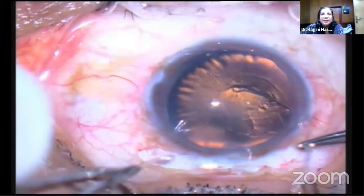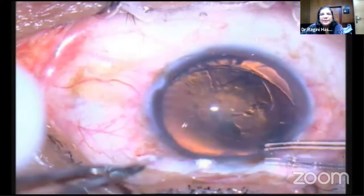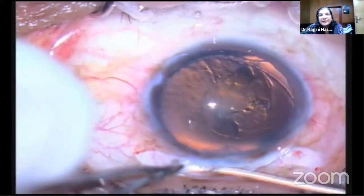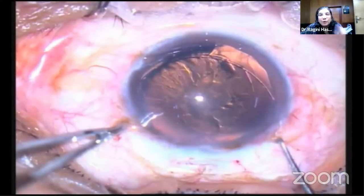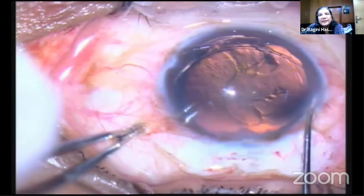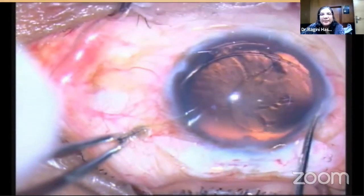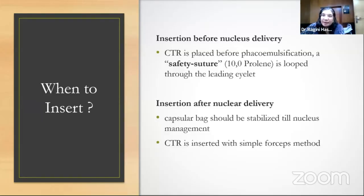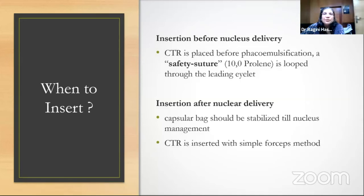As you can see in this video, the subluxation and crinkling from weak zonules are visible. The CTR is fed under the capsule, following the circular path of the ring, with the eyelets assisting placement. Slowly, in a circumferential manner, the ring is placed under the capsule. The ring can be inserted safely after capsulorrhexis before nucleus delivery, or after nucleus removal before cortex aspiration. Each case is customized — inserting before nucleus delivery prevents excess subluxation and vitreous prolapse, or it can be done afterwards.